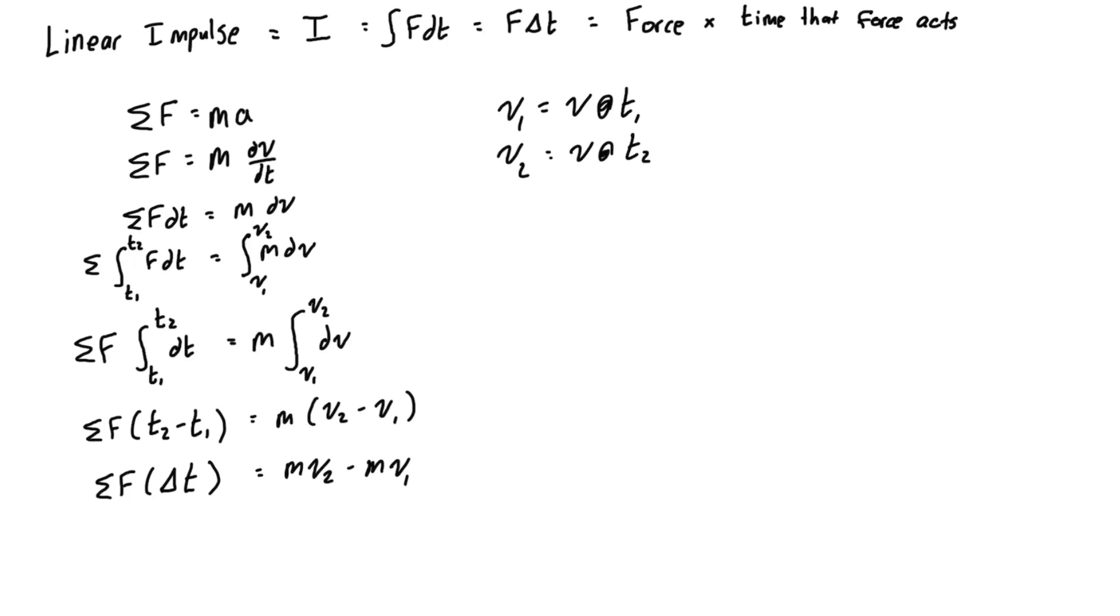Really what we've written here is the left hand side, this is impulse, or impulses because of the sigma sign if there's more than one, is equal to the change in momentum. I'll just specify that's the sum of our impulses is equal to the change in momentum of our system. So when a force acts on a body for duration delta t, it causes an impulse that will change the momentum of a body by the amount equal to the impulse.